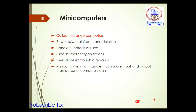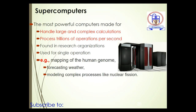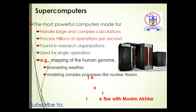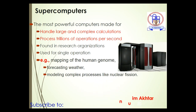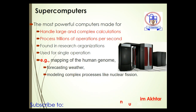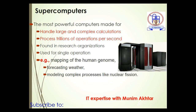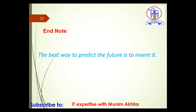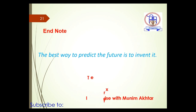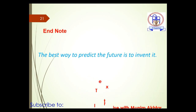Supercomputers are the most powerful computers and can handle large and complex calculations, processing trillions of operations per second for a single operation. They are used for tasks like mapping human genes, forecasting weather, and modeling complex processes like nuclear fusion. That concludes the topic of types of computers. Today's end note: the best way to predict the future is to invent it.